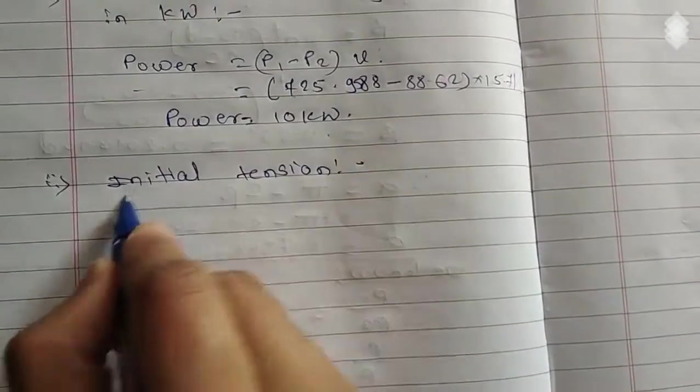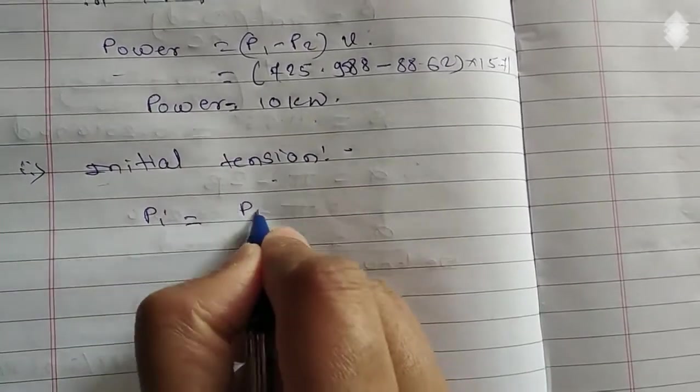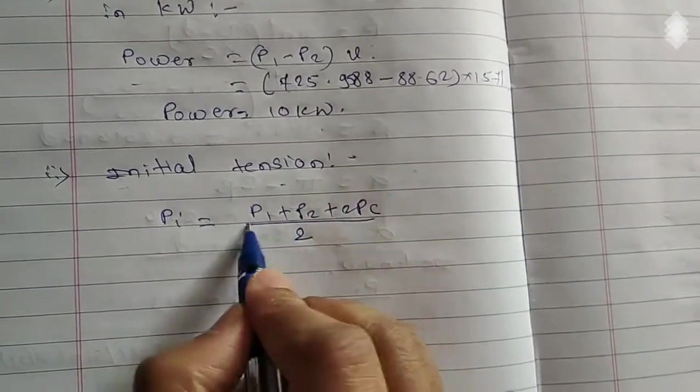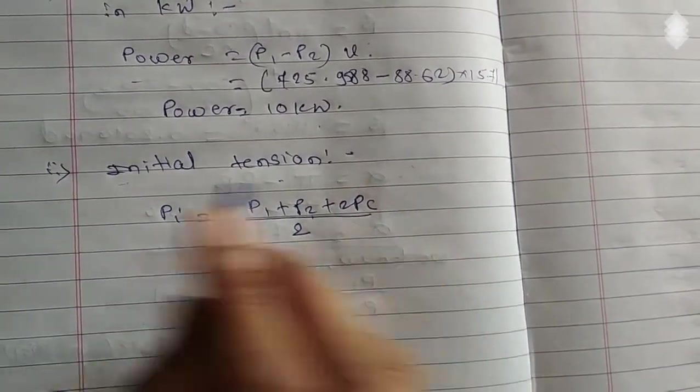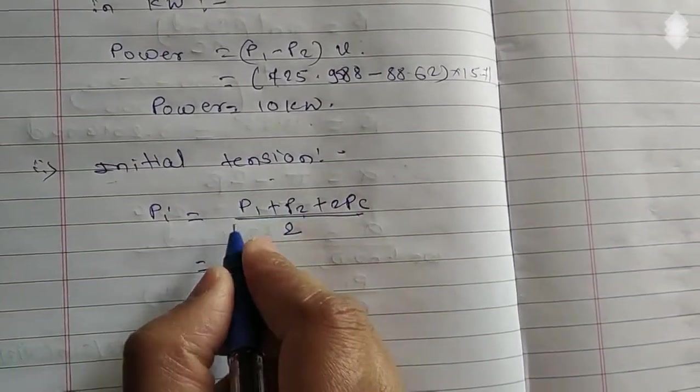And second they ask for initial tension. So initial tension Pi equals P1 plus P2 plus 2Pc divided by 2. We already have this value P1, P2, and 2Pc. So let's put the value and get the answer.